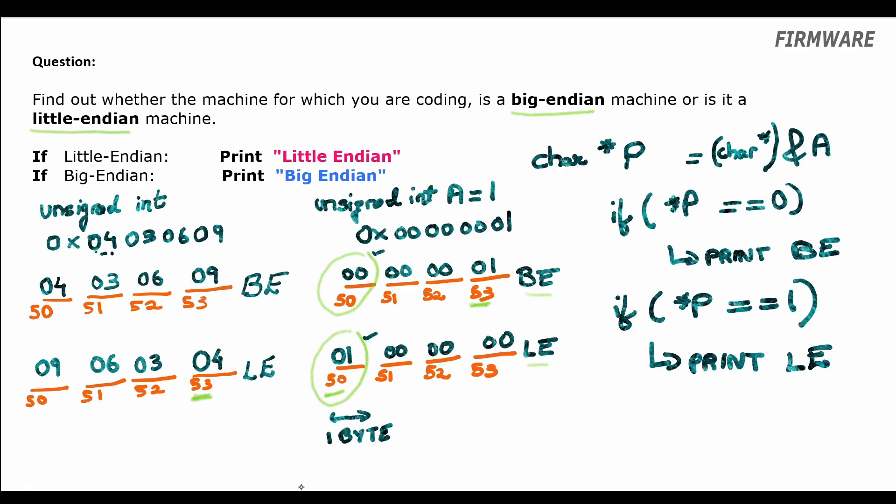This is how we could find out whether our system is big endian or little endian. There are more ways to find, and please do share your suggested method in the comment section for your preferred language. In the next two episodes, we will solve some big endian, little endian problems. Do subscribe to this channel, and if you found this video helpful, please hit the like button. See you!